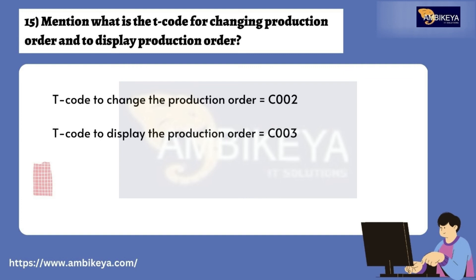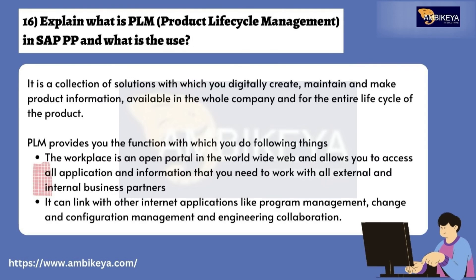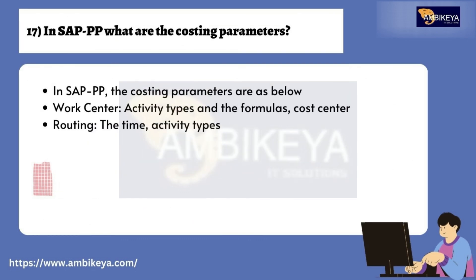Question number fifteen: mention what is the T-code for changing production order and to display production order. The T-code to change the production order is CO02. The T-code to display the production order is CO03. Question number sixteen: explain what is PLM (Product Lifecycle Management) in SAP PP and what is the use? PLM is a collection of solutions with which you digitally create, maintain, and make product information available across the whole company and for the entire life cycle of the product. PLM provides a workplace that is an open portal on the World Wide Web, allowing access to all applications and information needed to work with all external and internal business partners. It can link with other internet applications like program management, change and configuration management, and engineering collaboration.